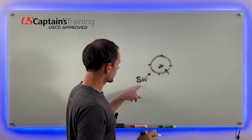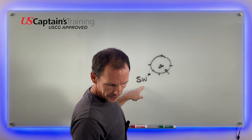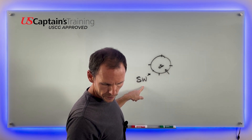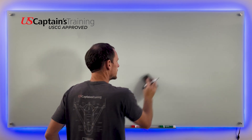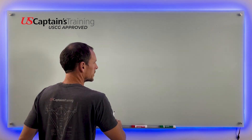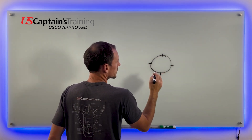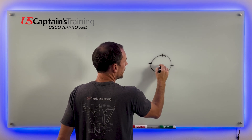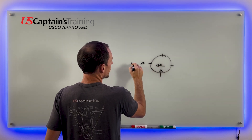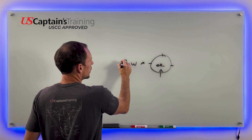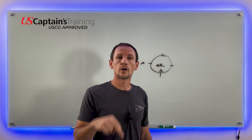Problem three: according to Buys Ballot's law, an observer in the northern hemisphere who experiences a south wind — where's the low pressure? Draw the diagram: north, east, south, west. They say a south wind — put your back to it and to your left is west. The center of the low is to the west. That is correct.